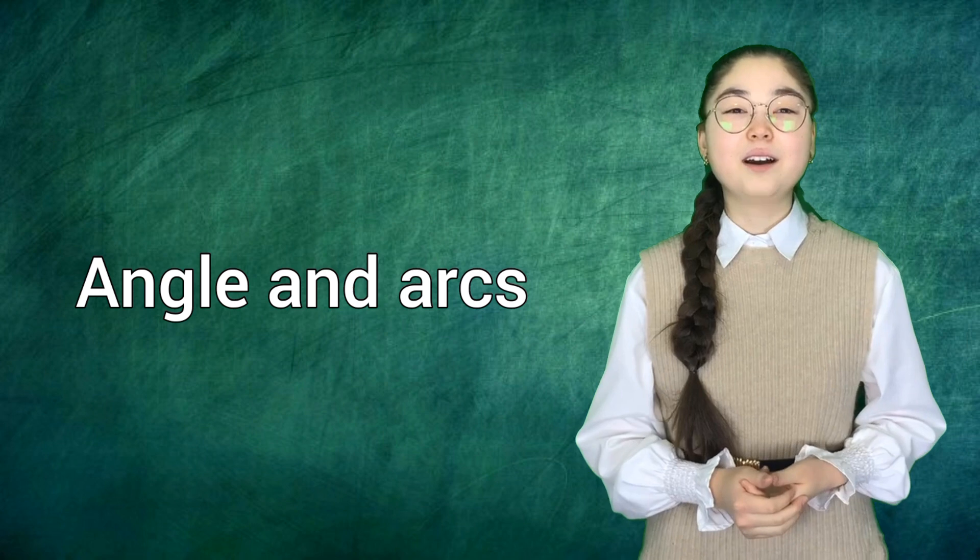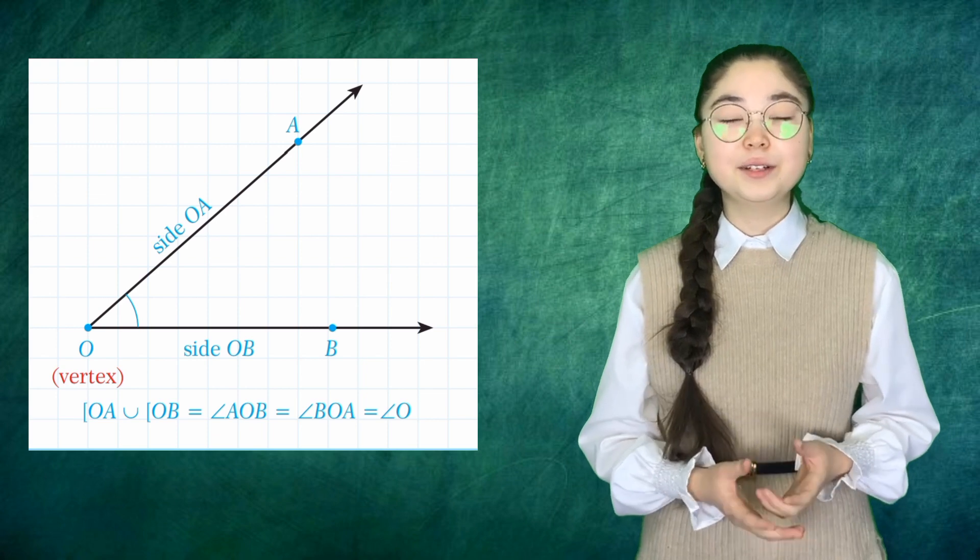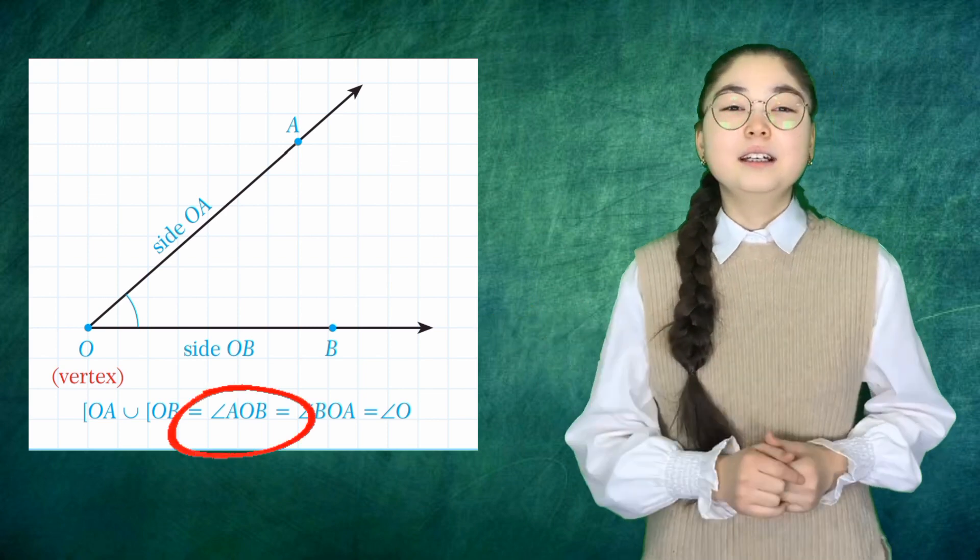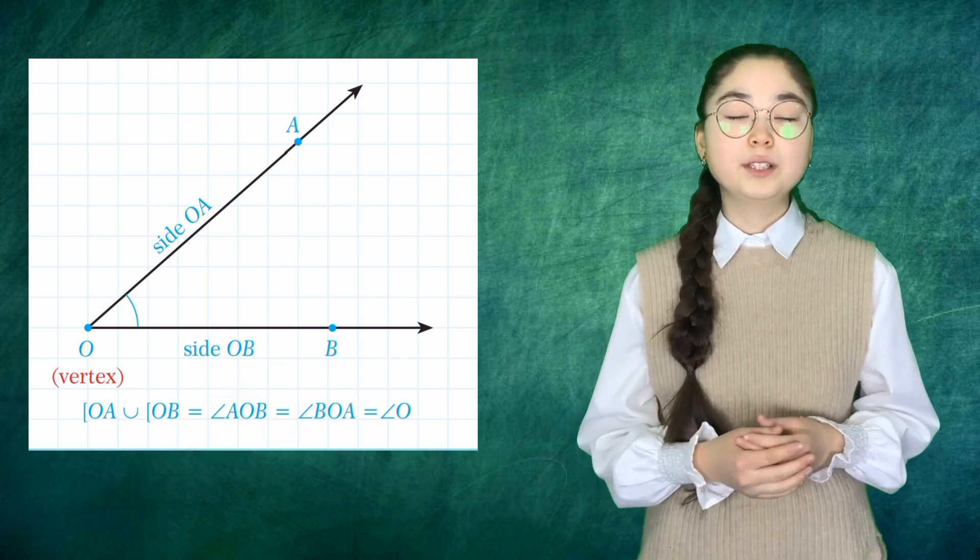Hi! In this video, we will learn about angles and arcs. You know that the angle is the space between two intersecting lines and a surface. We can write the angle like this. The common point O is called the vertex of the angle.